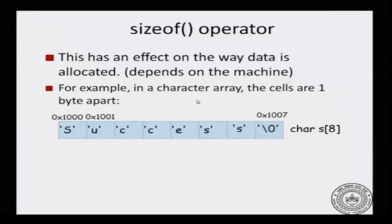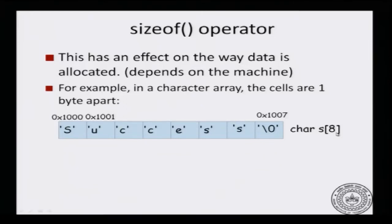The sizeof operator has an effect on the way data is allocated, and the way data is allocated depends on the machine. For example, if we have a character array, the cells are one byte apart. sizeof returns the number of bytes a data type occupies. For a character, that is one byte. So if you have a character array declared as char s[8], you have 8 cells each occupying one byte. If the array starts at hexadecimal address 1000, the next cell is at 1001, continuing until the last cell at 1007. This contains a null-terminated character array with the letters 's','u','c','c','e','s','s' followed by a null.